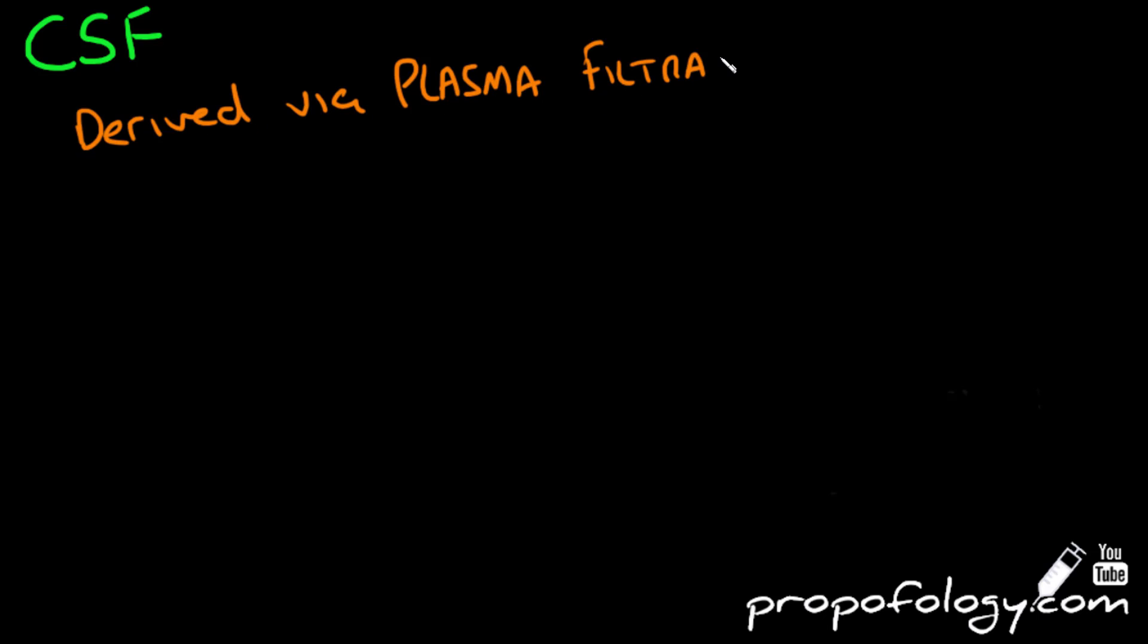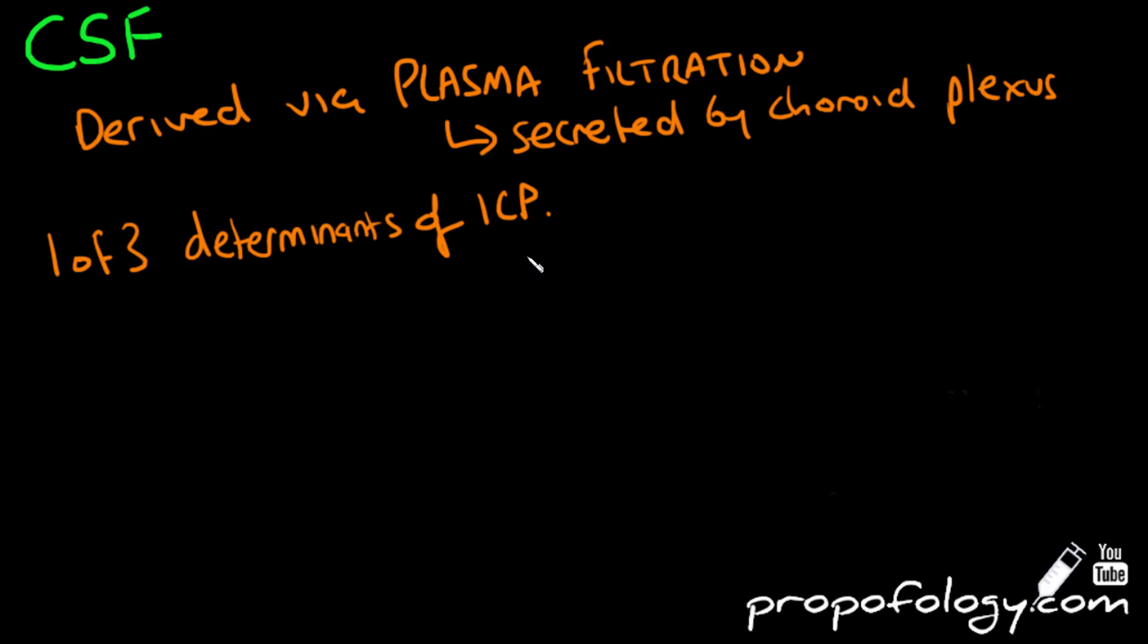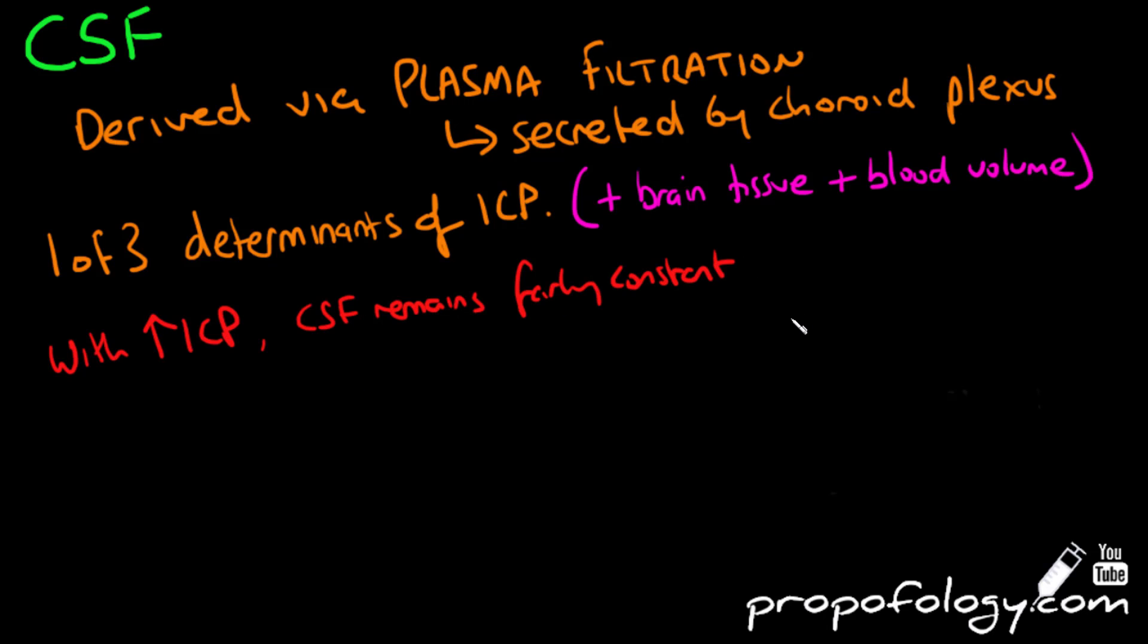CSF is made from plasma filtration and subsequent secretion by the choroid plexuses. It's one of the three factors that determine your intracranial pressure, the other two being your brain tissue and your blood volume inside your skull vault. Whenever you have increased intracranial pressure, CSF production remains relatively constant, however CSF absorption increases, thereby reducing the total CSF volume.